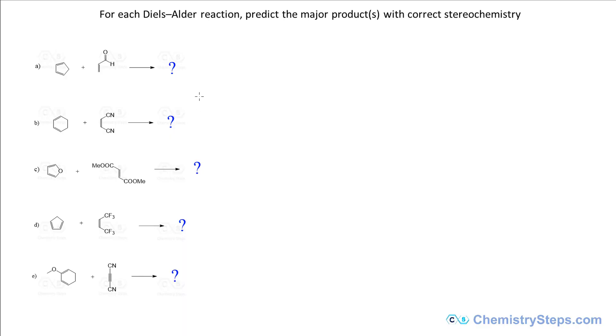In this exercise we will predict the products of Diels-Alder reactions when the diene is a cyclic compound. The compounds that are formed are bicyclic, and we're going to talk about the endo and exo compounds. Let's start from the beginning.